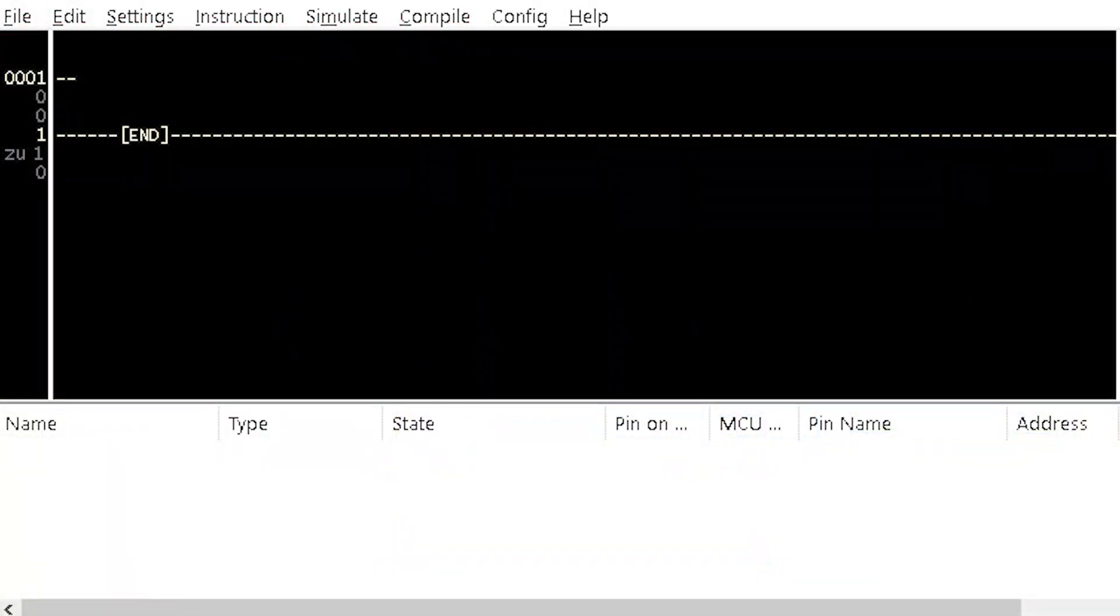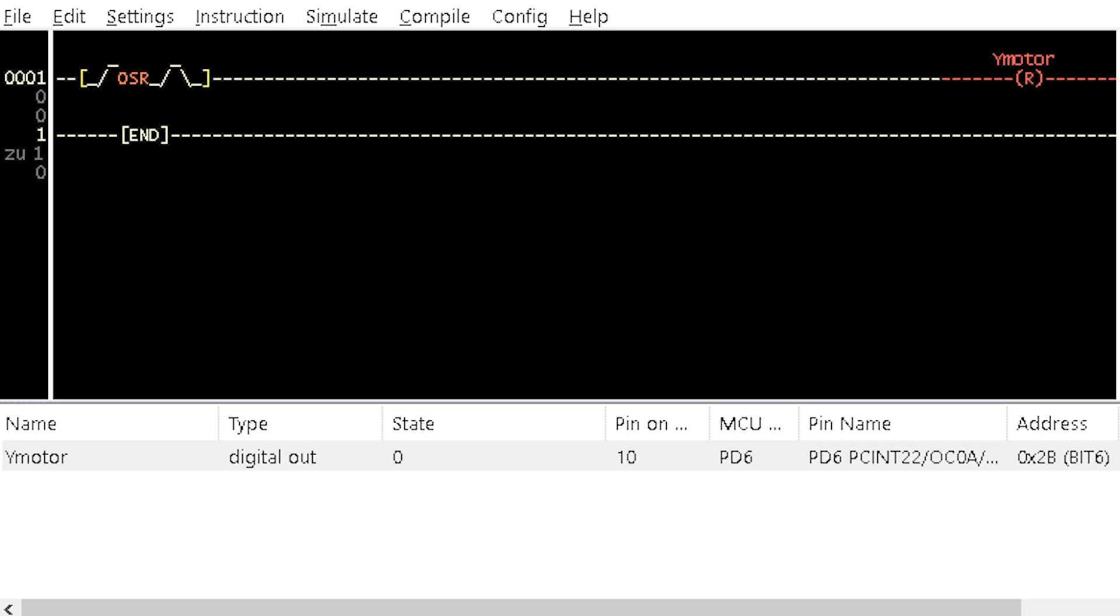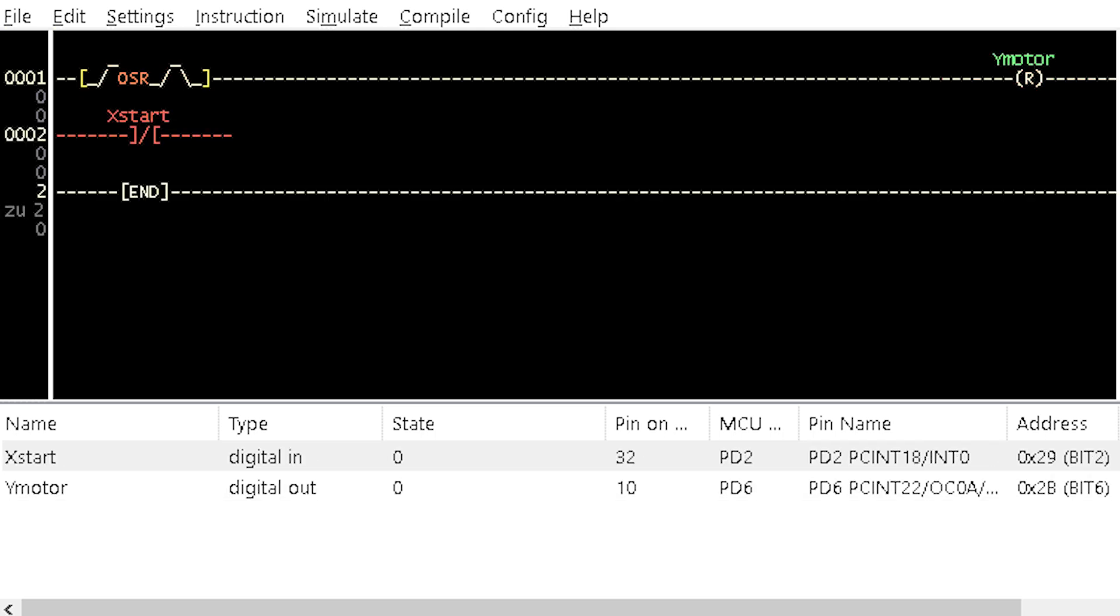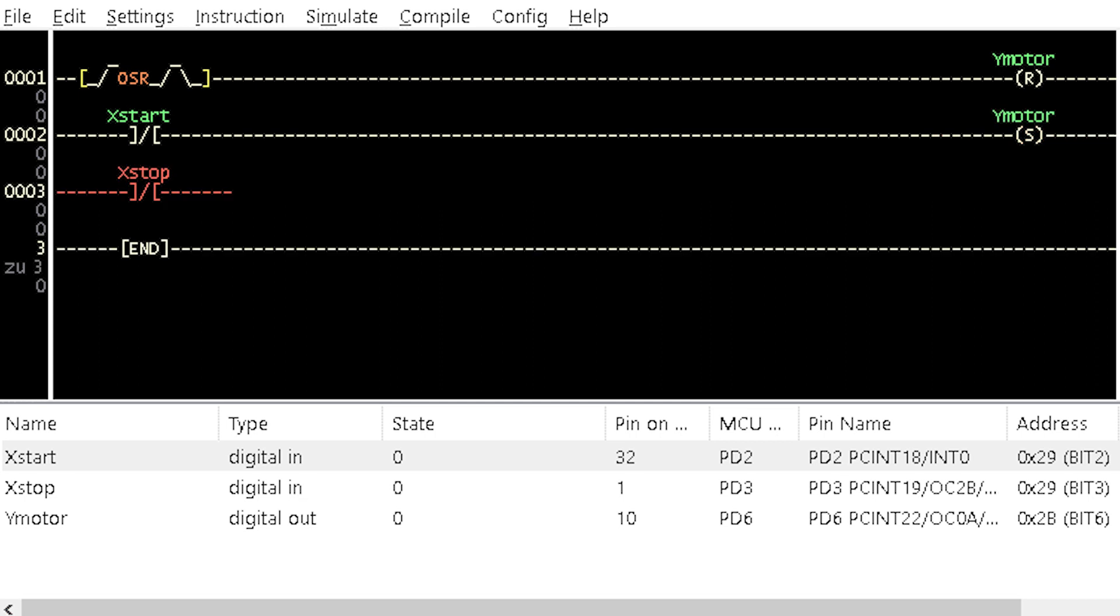Let's now create a simple start-stop logic in LDmicro. A one-shot rising and a motor reset coil in the first row. A start-closed contact and a motor set coil in the second row. A stop-closed contact and a motor reset coil in the third row.